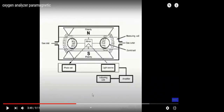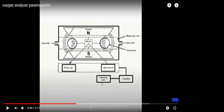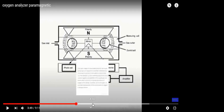Here is another diagram showing the magnetic fields, magnetic poles, glass spheres, and oxygen passing through. The light is scattered and measured to determine the oxygen reading.